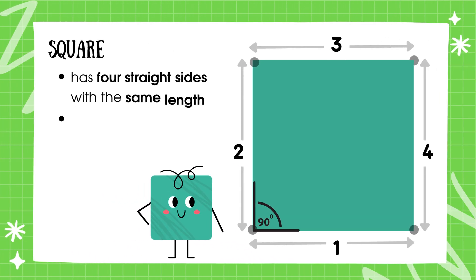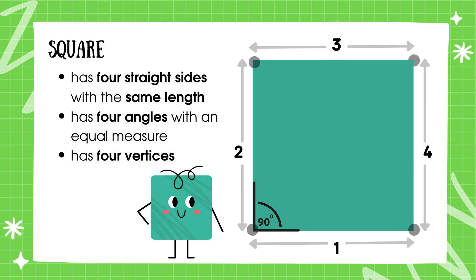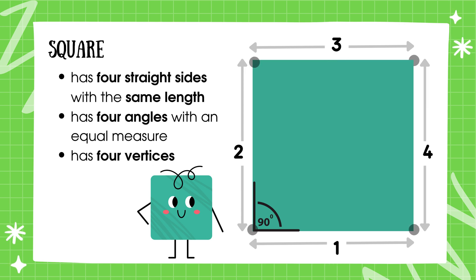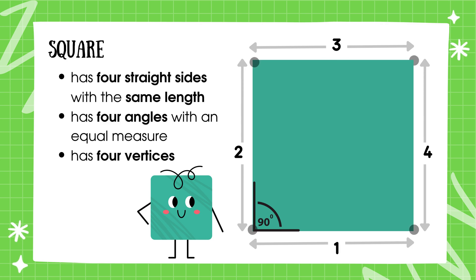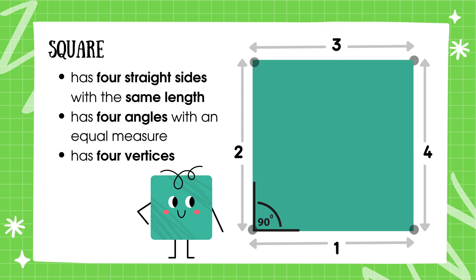Over here we have a square. A square is a special shape because it is what we call a regular polygon. That means all its sides are the same length and all its angles are the same too.